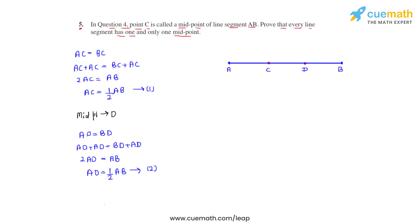So that can be taken as Equation 2. From Equation 1 and Equation 2 we can conclude that AC is equal to AD, therefore C coincides with D. Now by Axiom 4 we know that things which coincide with one another are equal to one another. Therefore a line segment has only one midpoint.